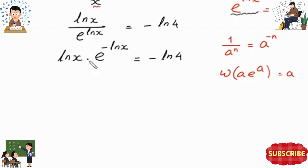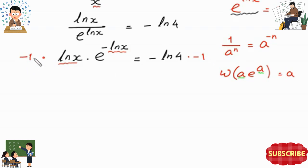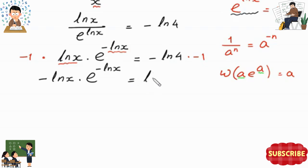To use the Lambert W function — where W of a times e to the power a equals a — we need the same expression in both places. Here we have negative ln of x and positive ln of x, so we multiply both sides by negative 1: negative ln of x times e to the power negative ln of x equals ln of 4.